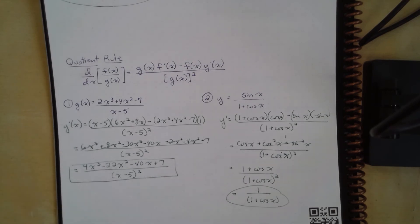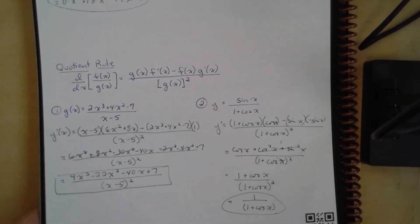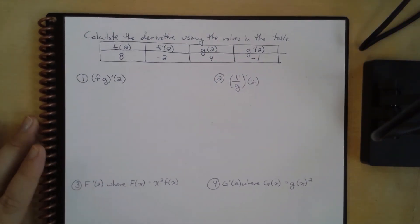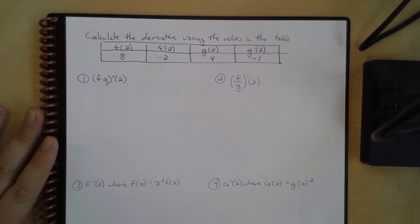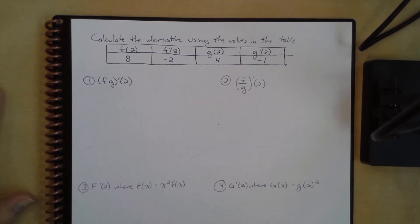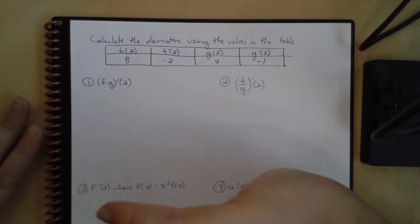We can apply the product and quotient rules in a more general sense using a table. We're asked to calculate the derivative using values in the table — you'll have problems like this in your assignment. First, we find (f times g) prime of 2.